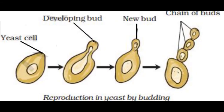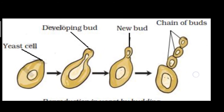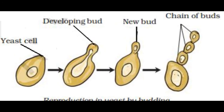Another organism which reproduces by the budding process is yeast. Can you recall the presence of yeast in food items? Yeast is a unicellular organism. Looking at the diagrams: in the second diagram a bud is developing, in the third diagram a new bud is formed, and in the fourth diagram you can see many buds forming chains. The newly formed buds will then separate from the parent.